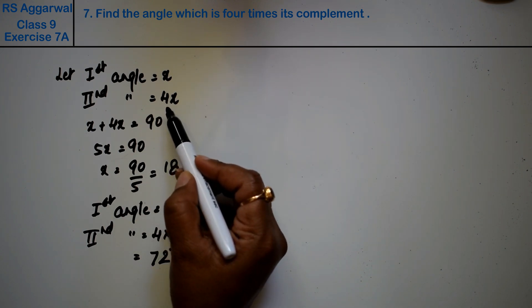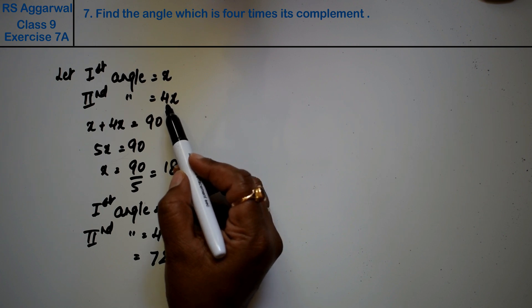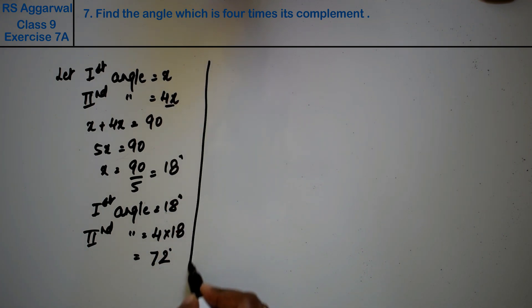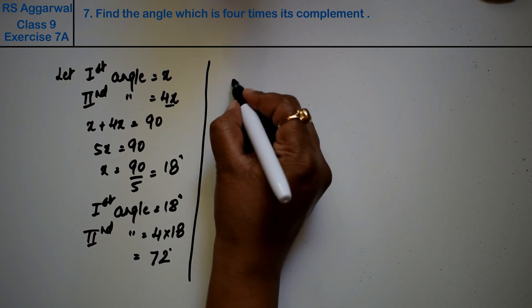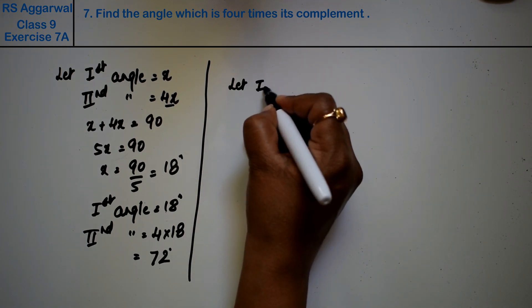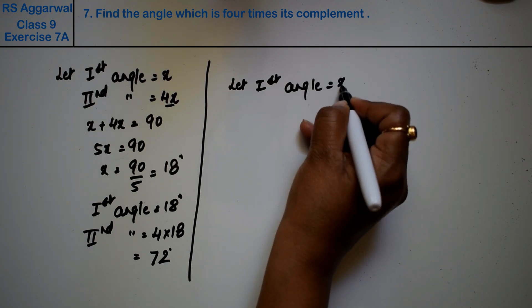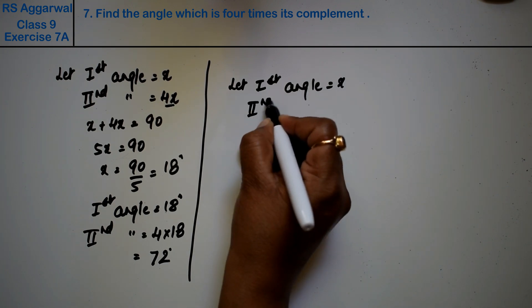Or do it like this. We have to find four times because the question says which is four times its complement. For complementary angles, let first angle is x, so what is our second angle?